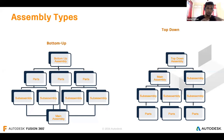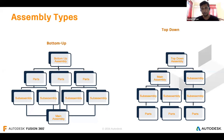With bottom-up, you start designing every individual part — you need all proper dimensions before you can assemble. First parts, then sub-assembly, then the main assembly. Whereas with top-down assembly, you start with the main assembly, the overall body part first, then depending on space availability and shape, you design the sub-assemblies, then the parts. So it works in various segments.